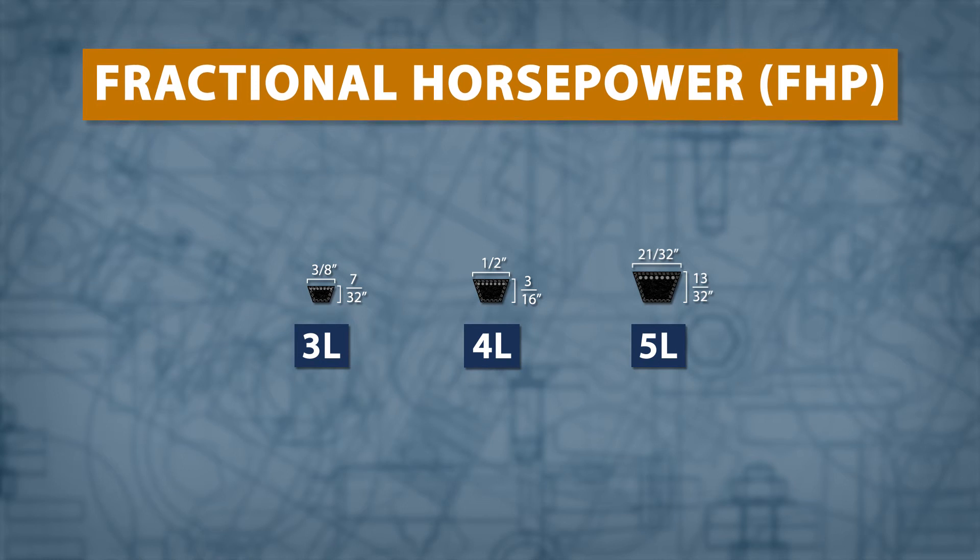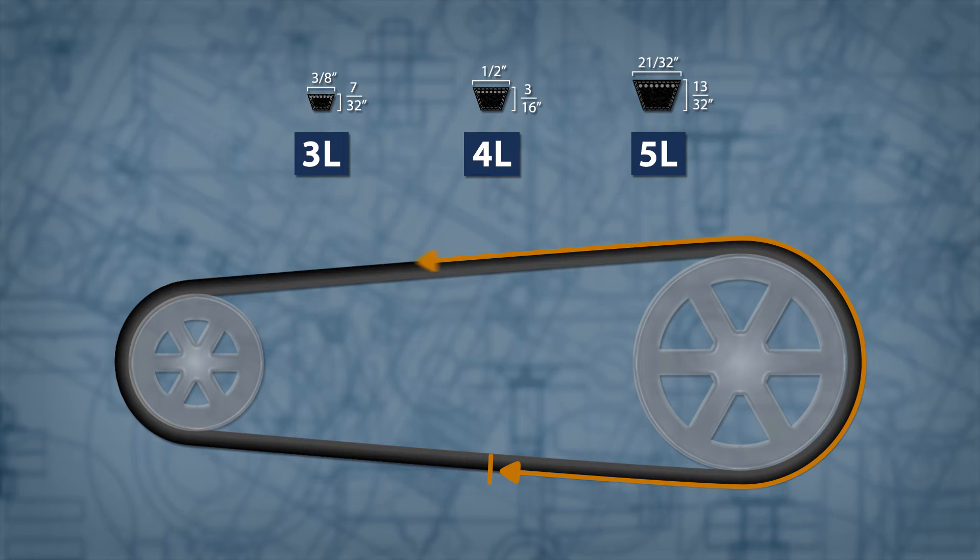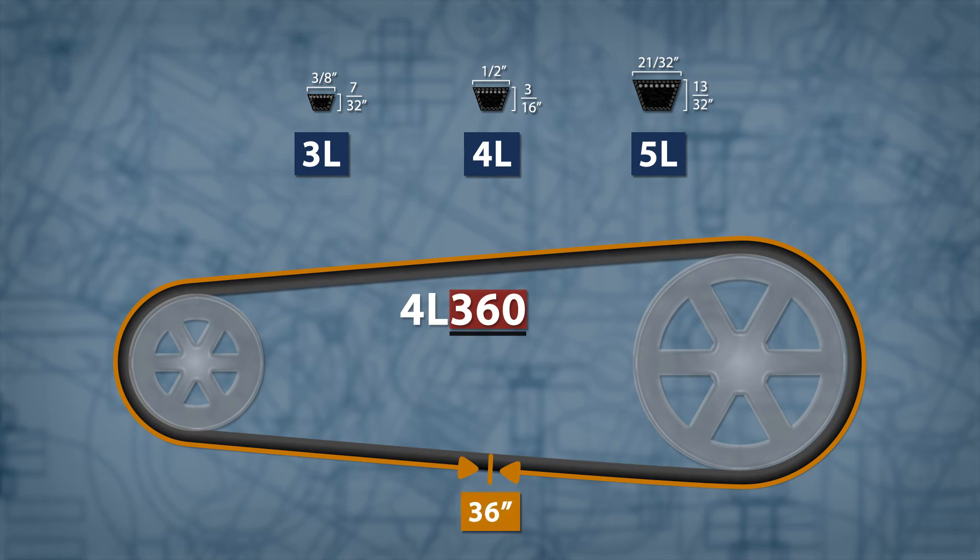Unlike classical belts, FHP belts are measured by the outside circumference. For example, a 4L360 belt is a half-inch wide light-duty belt with an outside circumference of 36 inches.